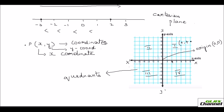In the second quadrant, x is negative and y is positive — it lies between x dash and y — so you have a negative x coordinate and a positive y coordinate. In the third quadrant, both x dash and y dash, so both x and y values are negative. And in the fourth quadrant, x values are positive and y is negative — between x and y dash — so you have positive x and negative y values.